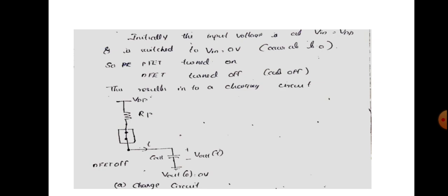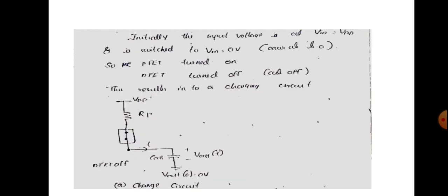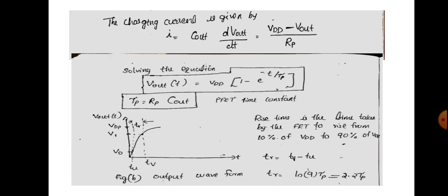There is a current flow in the charging circuit. The charging current is given by I equal to C_out multiplied by dV_out by dt. This is the basic equation for capacitor current, where C is C_out and V is V_out.